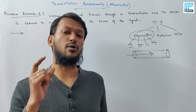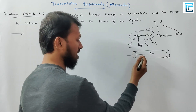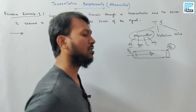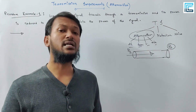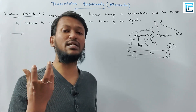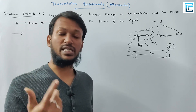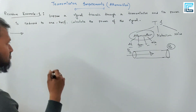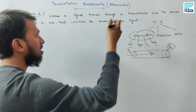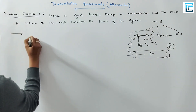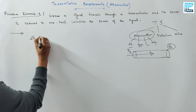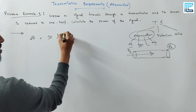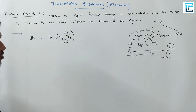If you have a signal, its power is measured in watts or voltage. The unit we use is the decibel. The decibel unit formula is: dB = 10 log₁₀ (P2 / P1).